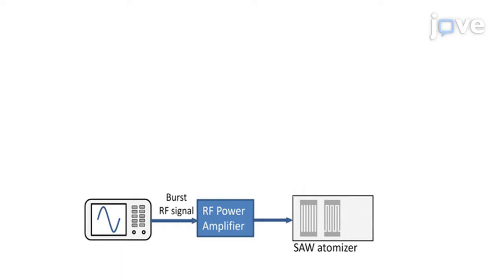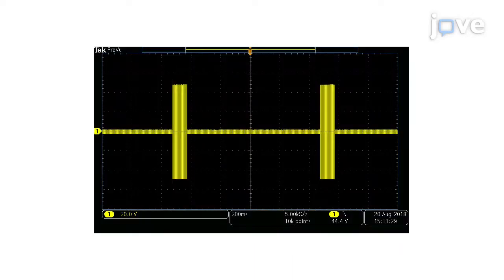Connect the device to an RF power amplifier driven by a function generator. Set the waveform of the RF burst signal to be a sine wave with a duty cycle of 10%. Set the wave frequency to the surface acoustic wave device oscillation frequency.